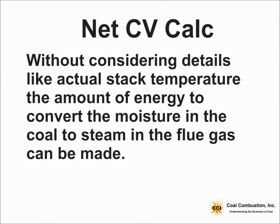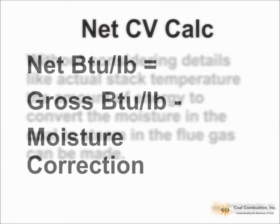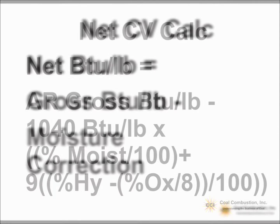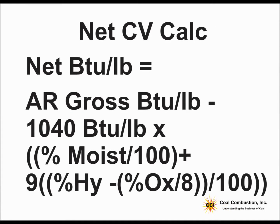Without considering a lot of the details, we're going to simply look at how much energy it takes to convert all that moisture into steam, and we're going to call that the moisture correction. Using BTUs per pound, this is what the actual equation looks like — pretty ugly, but I'm going to work us through this. The 1,040 BTU per pound is the energy that it takes to convert a pound of water into a pound of steam, so that's our conversion factor.